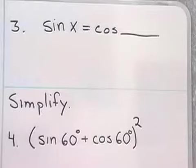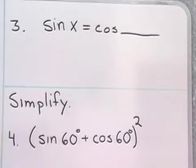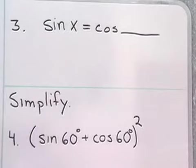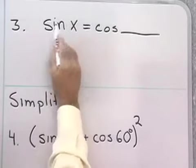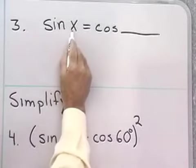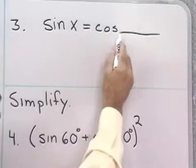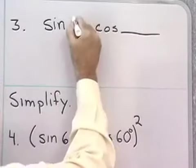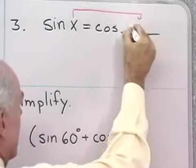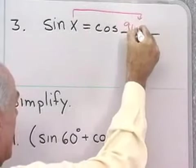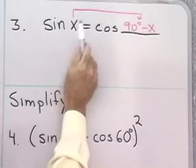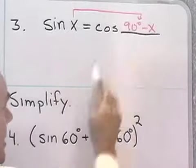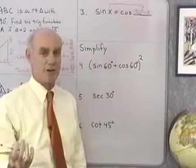Let's look at the next problem. We have the sine of X equals the cosine of — fill in the blank. A trigonometric function of an angle is always the cofunction of the angle's complement. The complement of X is 90 degrees minus X. So the sine of X is the cosine of 90 degrees minus X. That's the cofunction theorem.